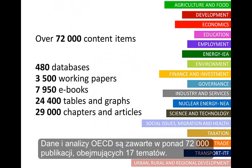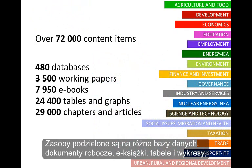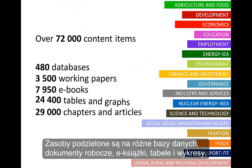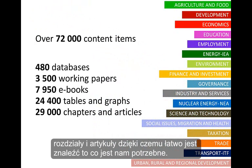OECD data and analysis is presented in over 72,000 content items, which span across 17 themes. Content items are broken down into various databases, working papers, ebooks, tables and graphs, and chapters and articles, making it easy to discover content.